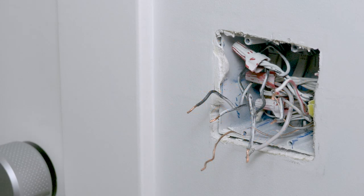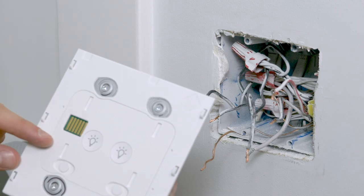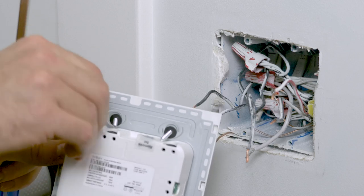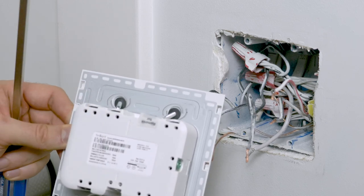Next I'll start wiring Brilliant. In this configuration for my switch I have a single pole switch on the left and a multi-way configuration on the right. So I'll be removing the three-way circuit sticker on the right for the multi-way wiring.